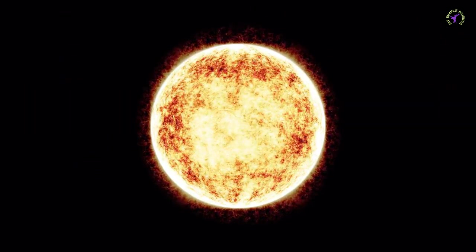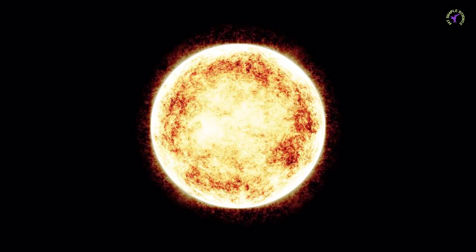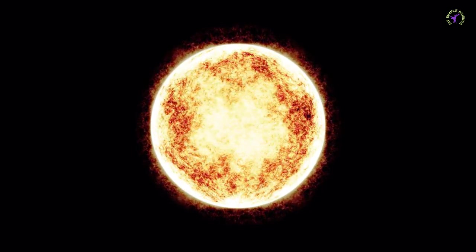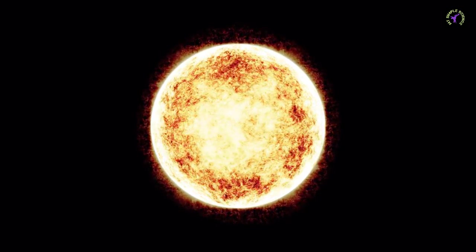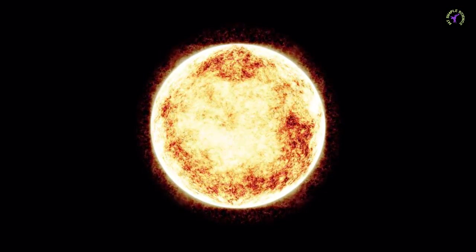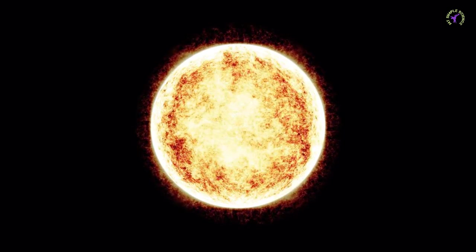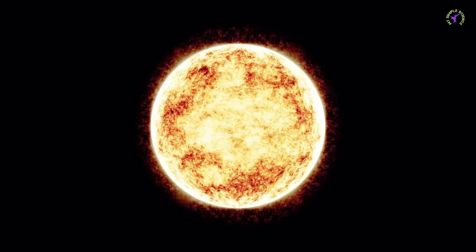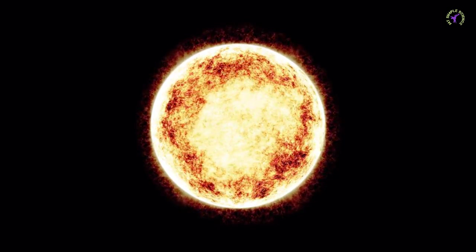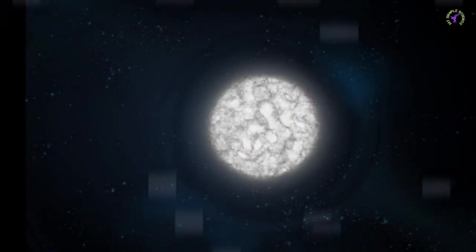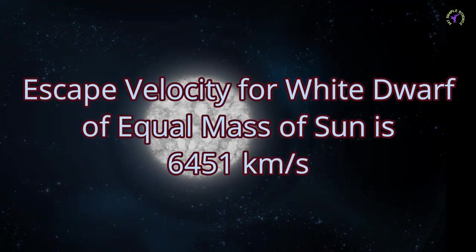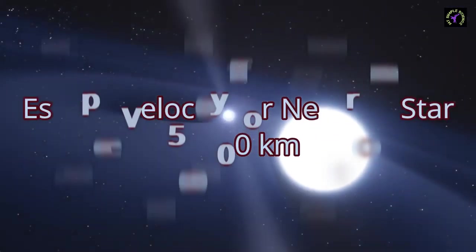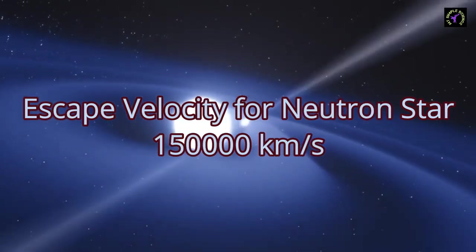The greater the mass of an object in space, the greater is its escape velocity. For objects with the same mass, escape velocity is greater for a smaller-sized object. This means the escape velocity of a White Dwarf of equal mass to the Sun is greater than the Sun's, because the radius of a White Dwarf is much lesser than the Sun. The escape velocity of a White Dwarf having mass equal to the Sun is 6,451 km per second. The escape velocity of a neutron star is 1.5 lakh km per second, which is half the speed of light.